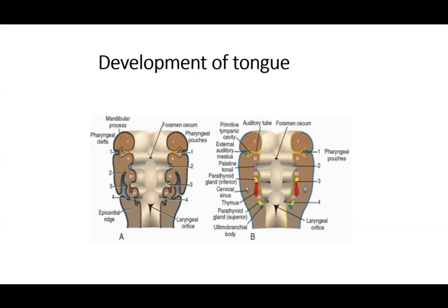We continue with our special embryology. We've discussed the development of the skull, mandible, and hyoid bone. Then we talked about the pharyngeal apparatus — clefts, arches, pouches, and membranes — giving rise to structures in the neck. Now we go on to structures developing from the floor diverticulum contributed from the pharyngeal arches: the development of the tongue and the thyroid gland, from the floor of the pharyngeal pouches.